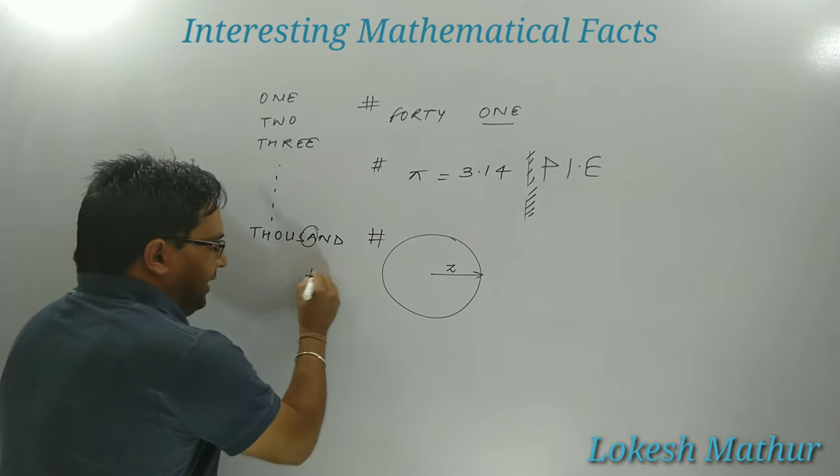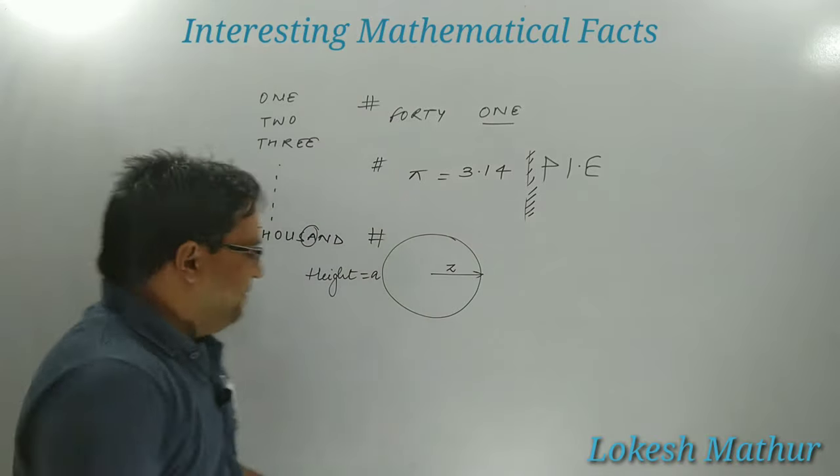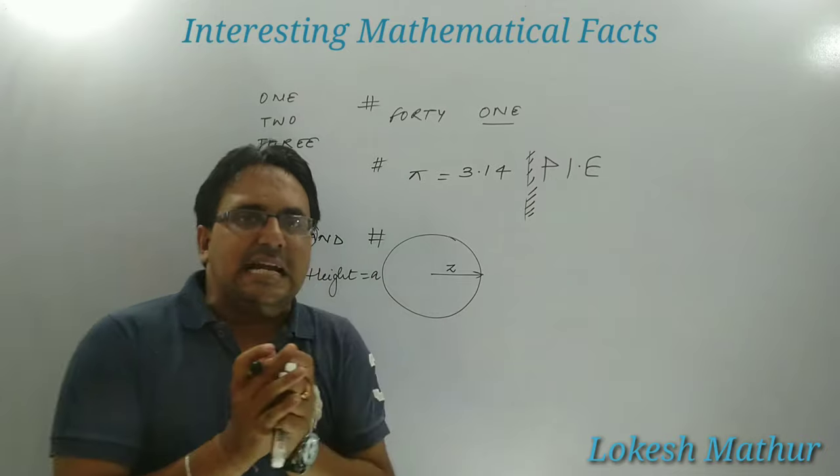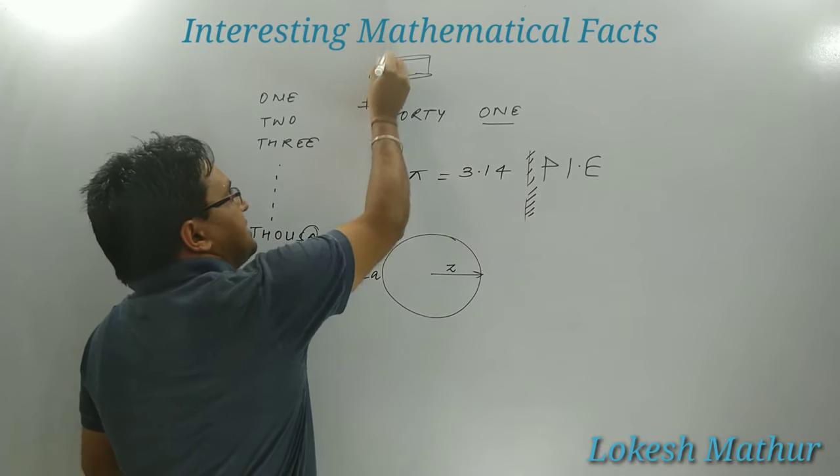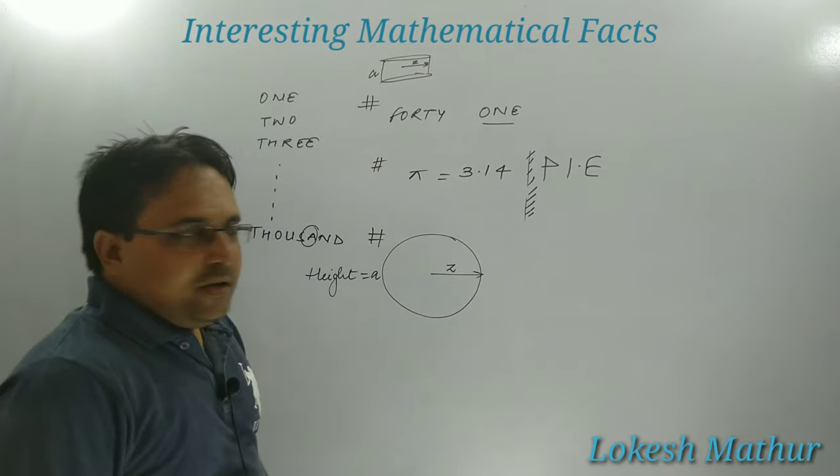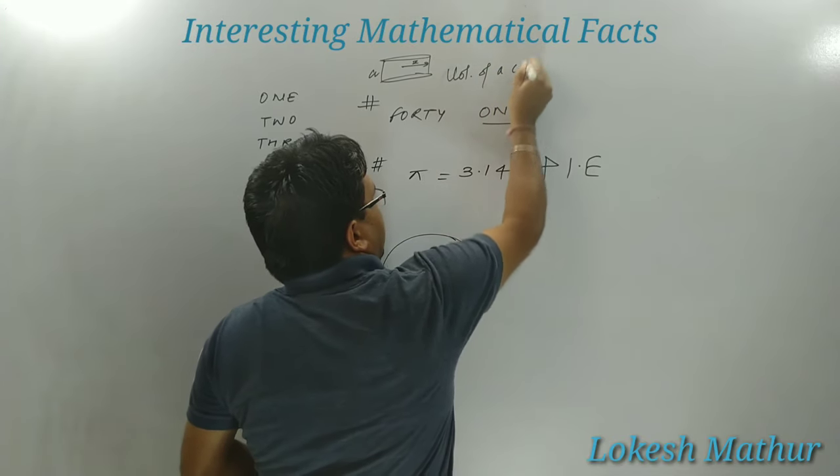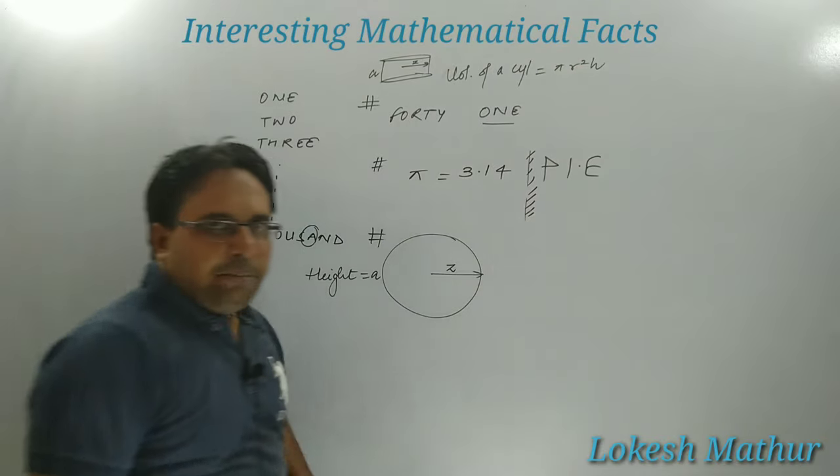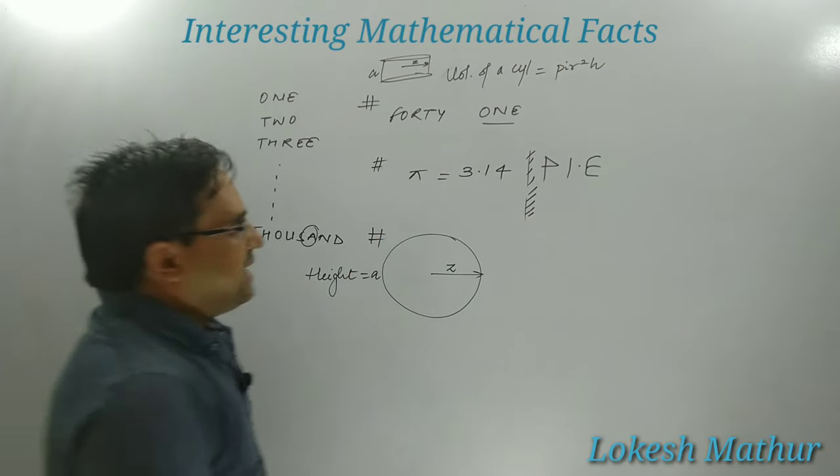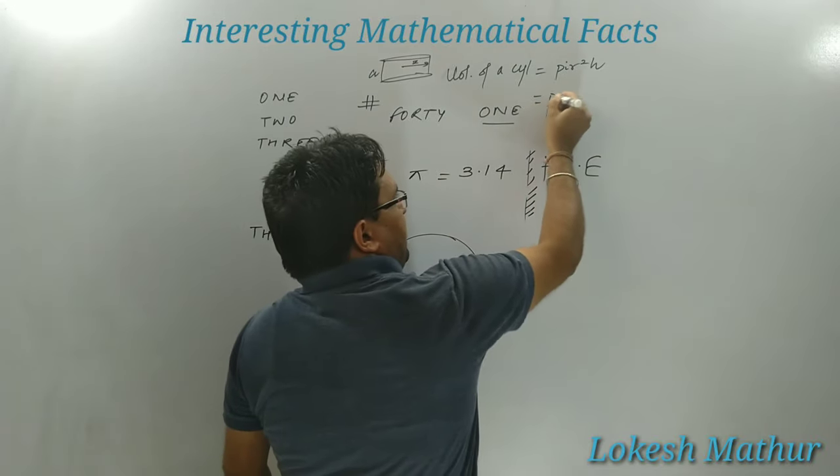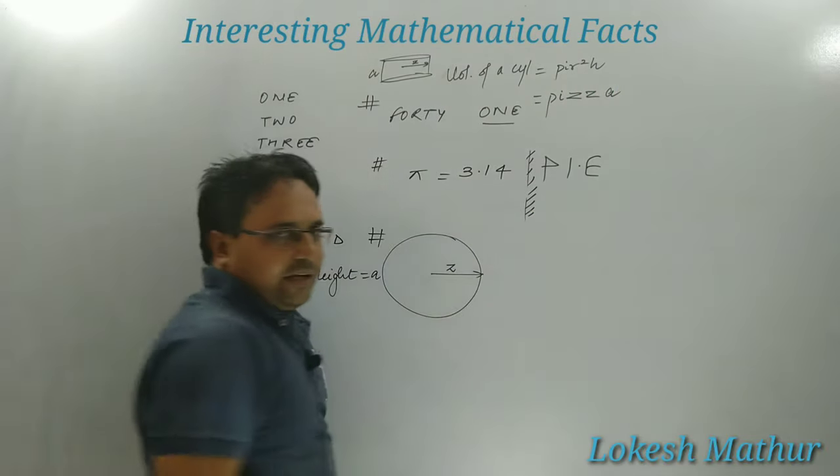And the width of the pizza, in fact the height of the pizza, let me assume the height of the pizza as A. I repeat: this is a pizza which has the radius Z and height of the pizza is A. This is a cylindrical object. This is how a pizza looks like, where height is A and the radius is Z. So for a cylinder, the volume is π r² h. Let me write pi instead of the pi symbol.